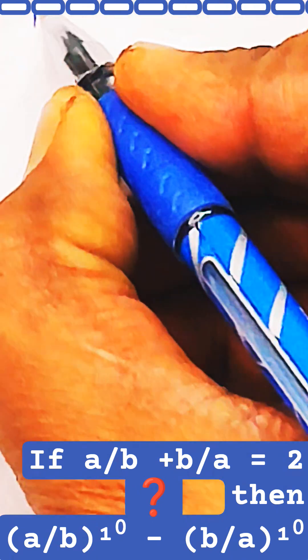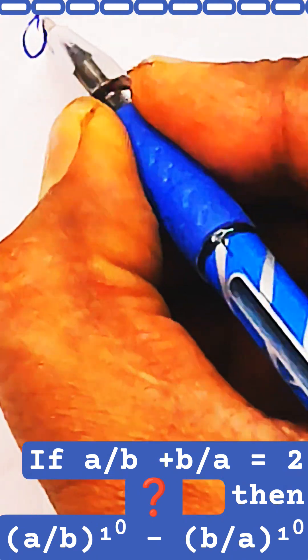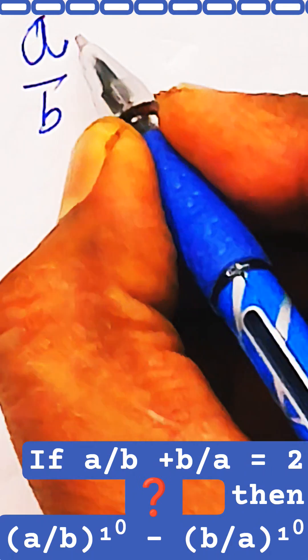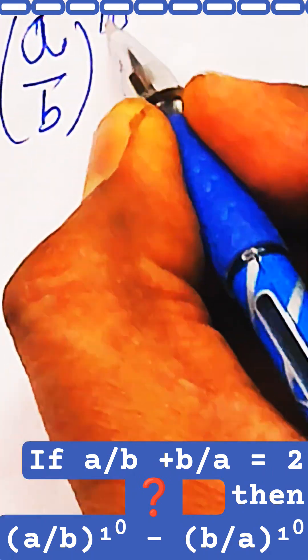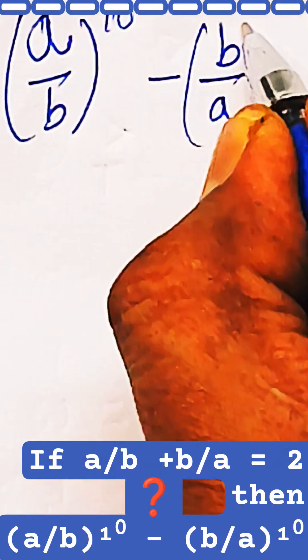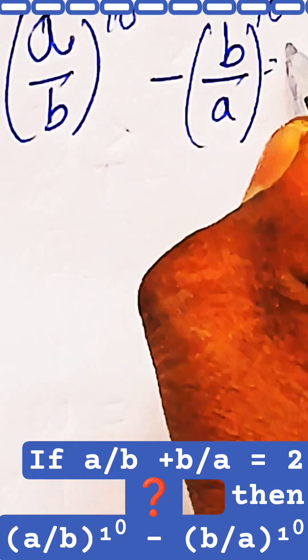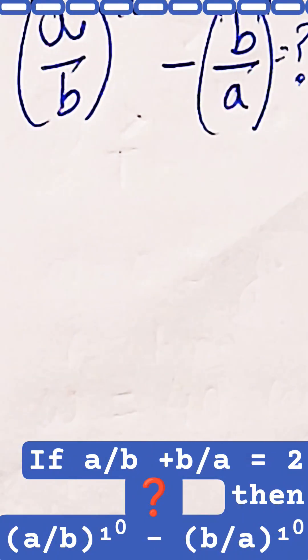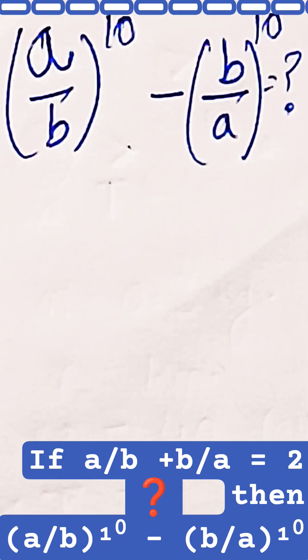In this question, we need to find the value of (a/b)^10 minus (b/a)^10. What is the value of this algebraic expression?